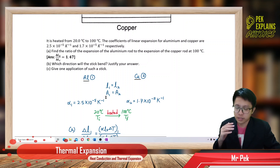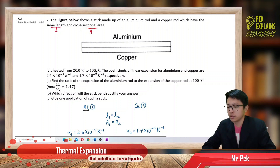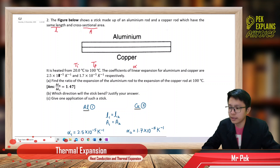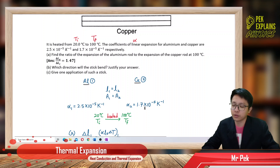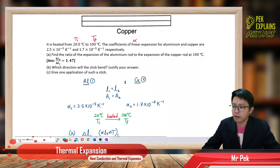Cross-sectional area one equals cross-sectional area two. Now, heated from 20 degrees Celsius to 100 degrees Celsius — 20 is the initial temperature and 100 is the final temperature. The coefficient of linear expansion alpha for aluminum, alpha 1, is 2.5 × 10⁻⁵ and for copper, alpha 2, is 1.7 × 10⁻⁵. When I have two objects I always separate into two columns so you can see the data systematically.